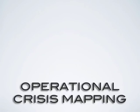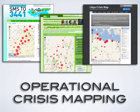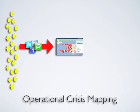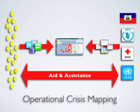This is George Chamalis from Rogue Genius. The following presentation is based on my experience as the technical lead on crisis mapping deployments for Pakistan, Sudan, and Libya. Operational crisis mapping combines the observations of citizens on the ground with the operational information being collected by response organizations in order to support the delivery of aid and assistance during a crisis.